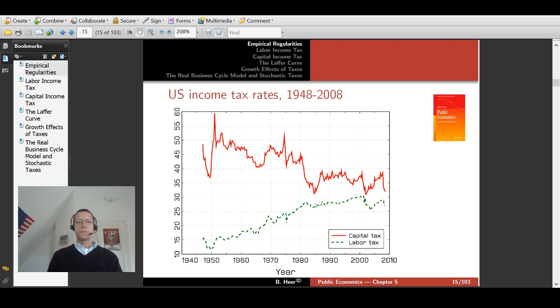Here you find the US income tax rate in the period 1948-2008. As you can see, the upper curve, the red line, that's the capital income tax rate. It has been falling ever since 1950 by about 20-25 percentage points from 55 to 30 percent. The green line, the broken line, that's the labor income tax rate, and it has been increasing over this period from 1950, starting at about 10-12 percent in 1952 to approximately 30 percent in recent years.